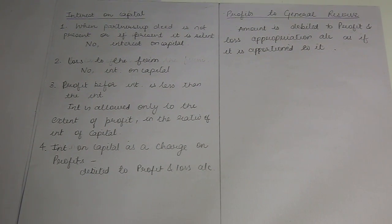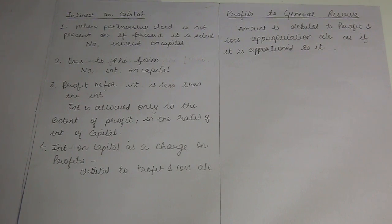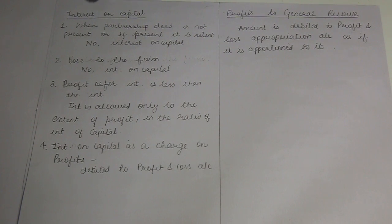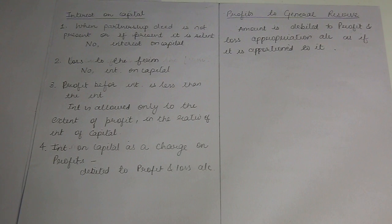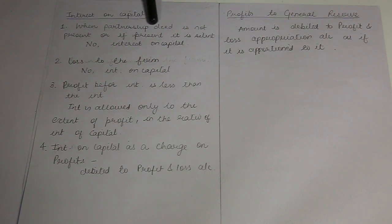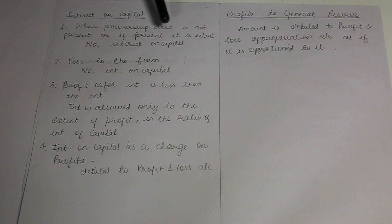Interest on capital. In the same way we calculated average period for interest on drawings, we similarly calculate interest on capital. There are two cases. Case 1: when a partnership deed is not present, or if present, it is silent — nothing is said about interest on capital.